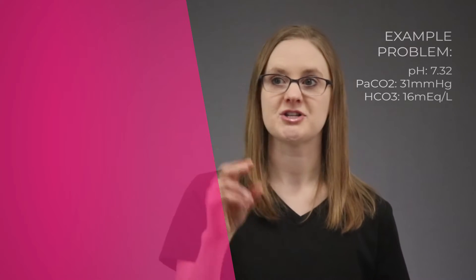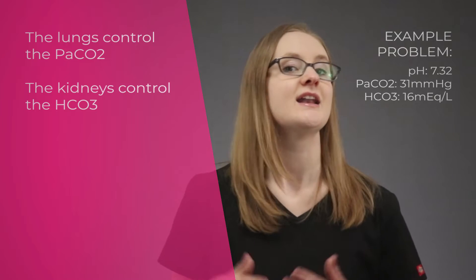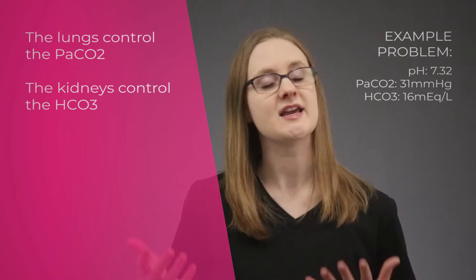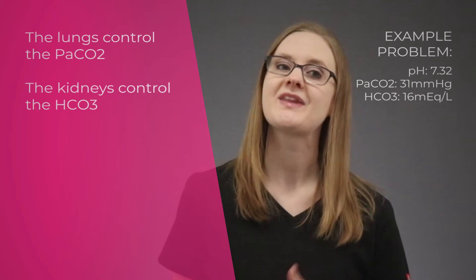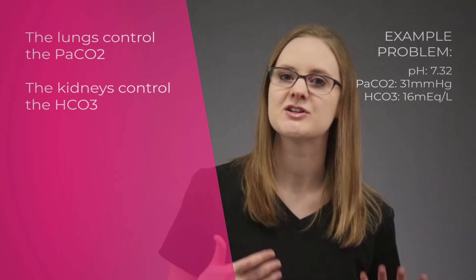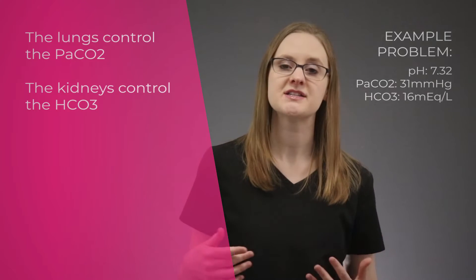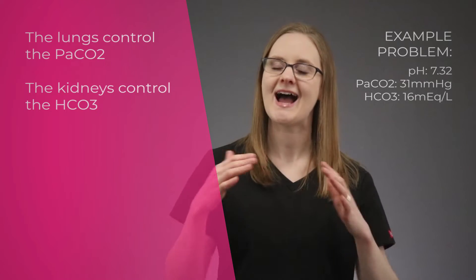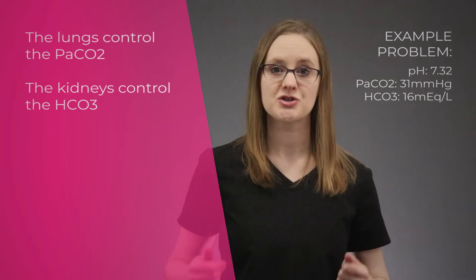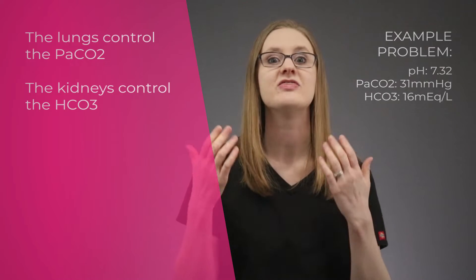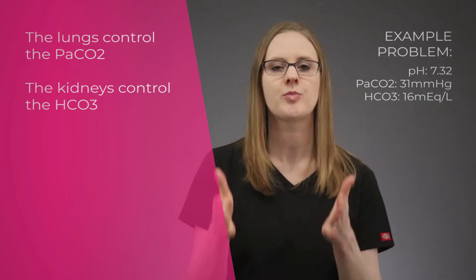Once you've decided that the pH is acidic or basic, you'll look at the PaCO2 and the HCO3 values to determine which one caused the problem in the first place. There are only two options: the lungs or the kidneys. The lungs control the PaCO2, and the kidneys control the HCO3. If the pH is acidic and the PaCO2 is higher than normal, that means the lungs are holding onto way too much acid, and they are the problem.